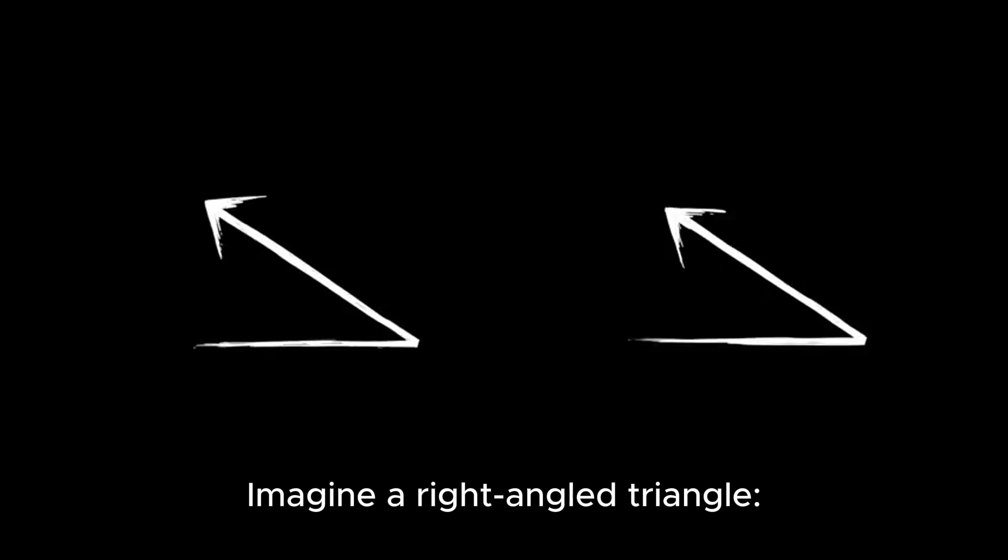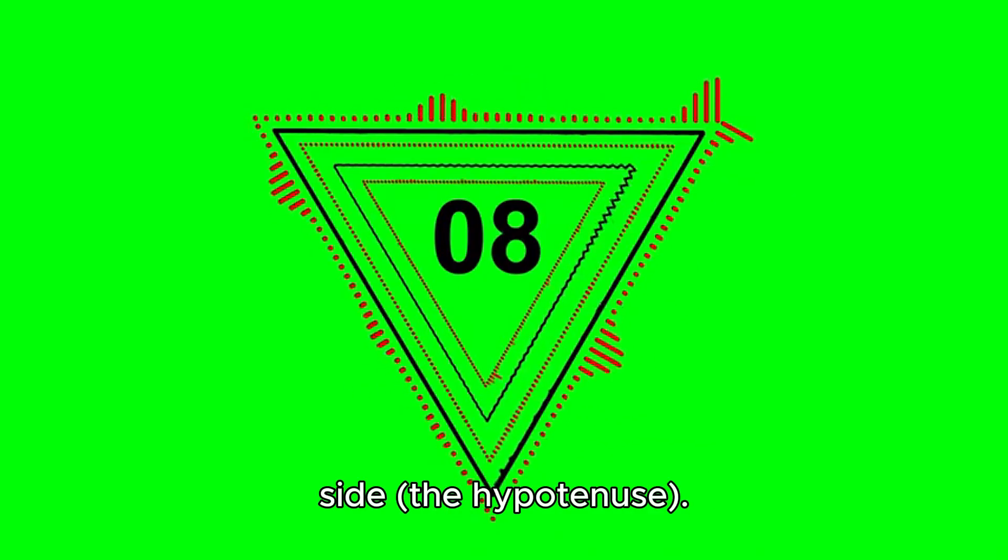He discovered something extraordinary—what we now call the Pythagorean theorem. Imagine a right-angled triangle. Pythagoras found that if you square the lengths of the two shorter sides and add them together, you'll get the square of the longest side, the hypotenuse.